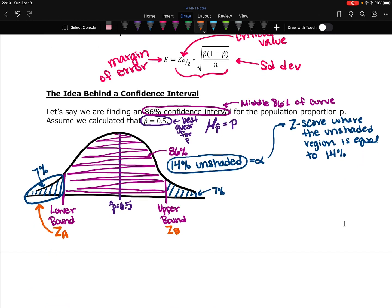So a confidence interval is really no different from finding the middle 86% of the curve. It's just wrapped up in a nice, clean equation for us. So if I wanted to go ahead and find what that would be, I would do equals norm.s.inv. 14% is the unshaded region, but I want half of that. So I would plug in 0.07.